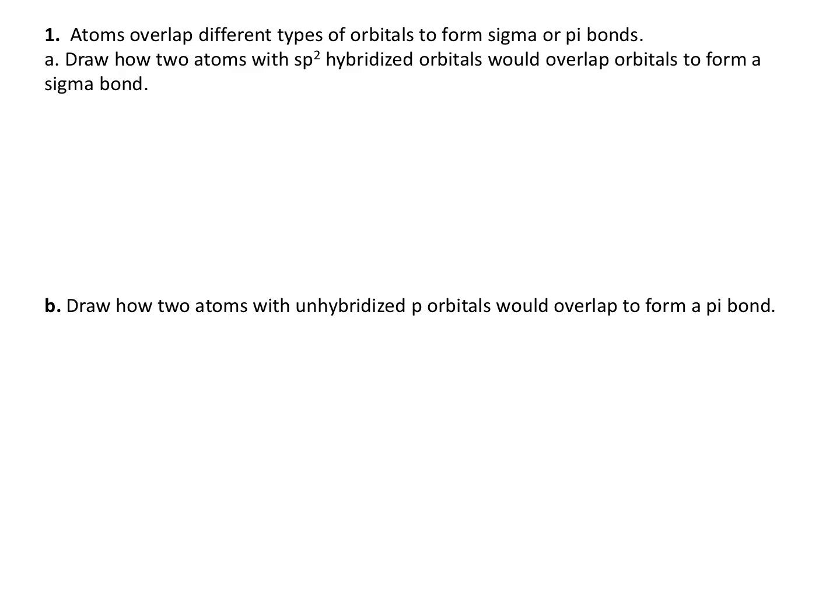In this question we are told that atoms overlap different types of orbitals to form sigma or pi bonds. The first part would like us to draw how two atoms with sp2 hybridized orbitals would overlap orbitals to form a sigma bond.